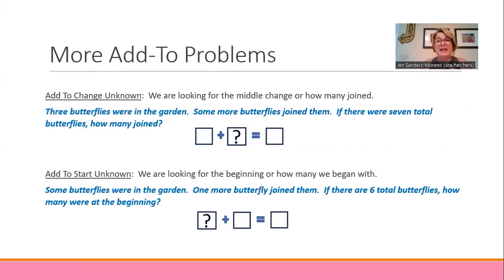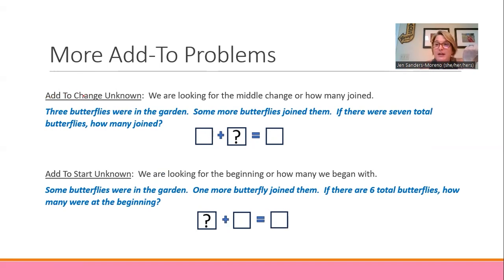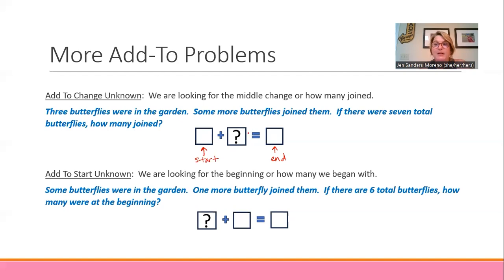There are two more forms, and to me these are harder — not impossible, but I would start with results unknown and then go to change unknown. Change unknown means we're looking for the middle number. We know how many we start with, we know how many we're going to end with, but what I don't know is the change that's happening in between.